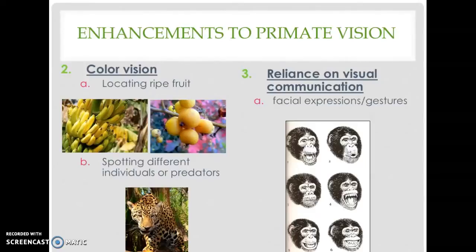Primates also rely very heavily on vision for communication through facial expressions and body gestures that communicate emotional state — very similar to the way humans also rely on facial expressions and body language to assess other people's reactions or emotional states. Visual communication is also important for human primates, as human infants acquire their language capabilities primarily through visual means — watching facial expressions and the mouth as it forms words and sounds.